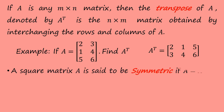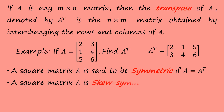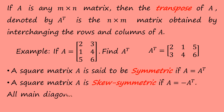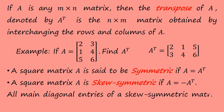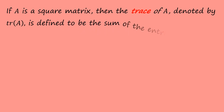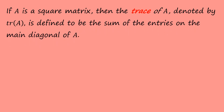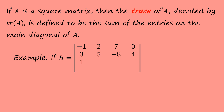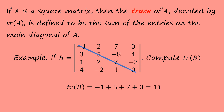A square matrix A is said to be symmetric if A equals A transpose. A square matrix A is skew-symmetric if A equals negative A transpose; all main diagonal entries of a skew-symmetric matrix must be 0. If A is a square matrix, then the trace of A, denoted tr(A), is defined as the sum of the entries on the main diagonal of A. For example, if B is a 4 by 4 matrix and we compute the trace of B by summing the main diagonal entries, we obtain tr(B) equals 11.